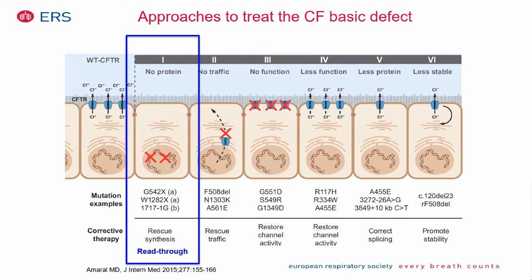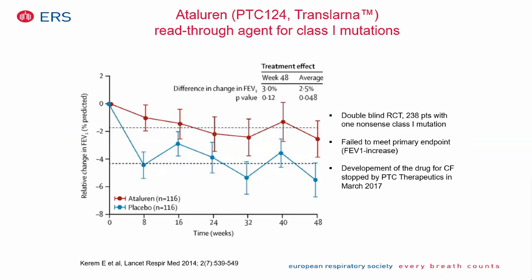In the remaining time, the focus turns to treating the basic CFTR defect — the exciting new therapies emerging. Understanding mutation classes is now essential. The first trials aimed to read through stop codons in class 1 mutations; the furthest-developed drug was ataluren. However, a study of nearly one year of treatment failed to reach the endpoint of meaningful FEV1 improvement, and the company halted development of this product.